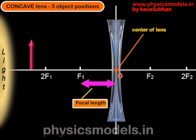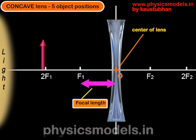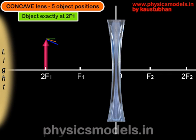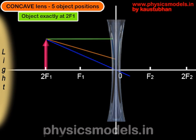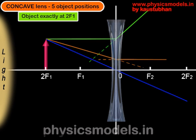Now let's move the object closer to the lens and put it at 2F1. We draw the same three rays. The green ray is parallel to the principal axis — it refracts, diverges, and its projection passes through F1. The orange ray aimed at F2 travels parallel to the principal axis and is projected back with a dotted line. The blue ray goes through O without any change. The image is again virtual, erect, and diminished, with its position between O and F1. The position and size of the image appear consistent for different object positions.